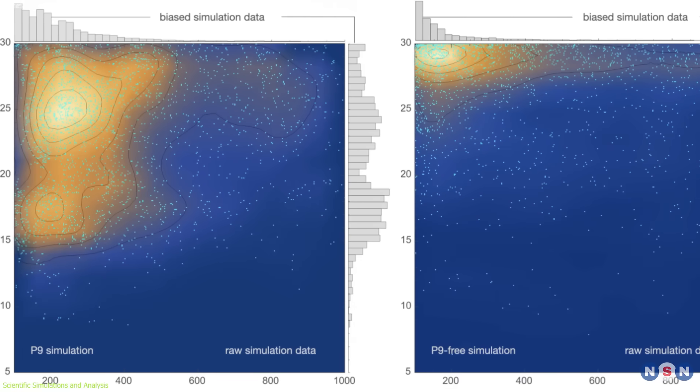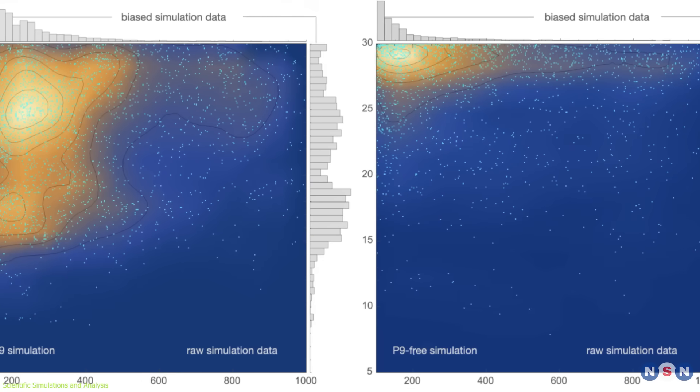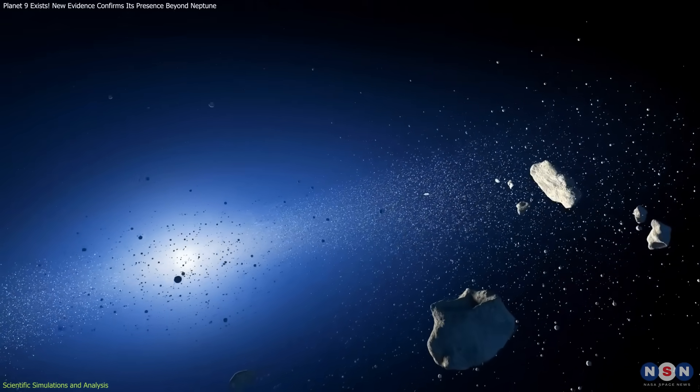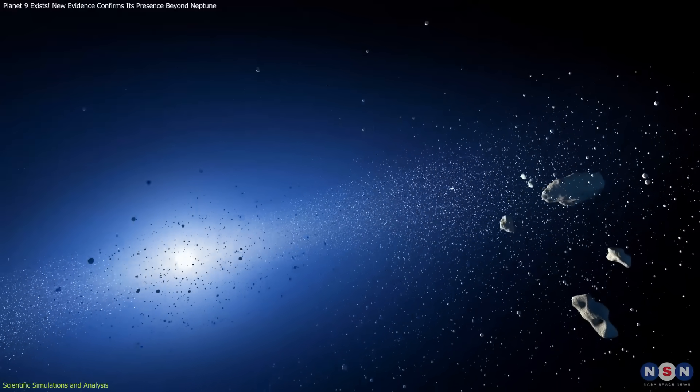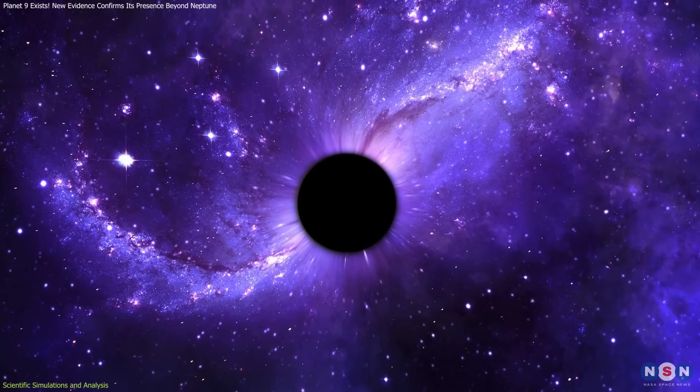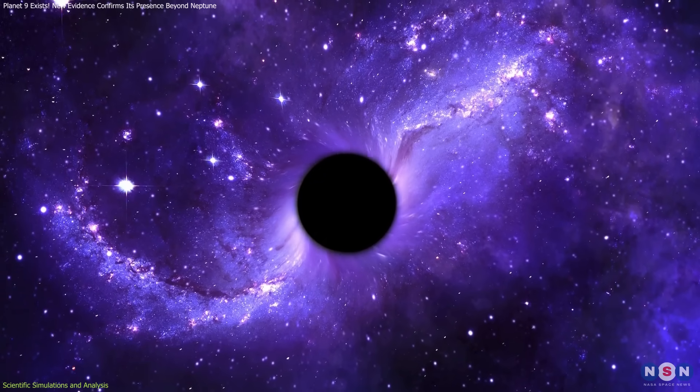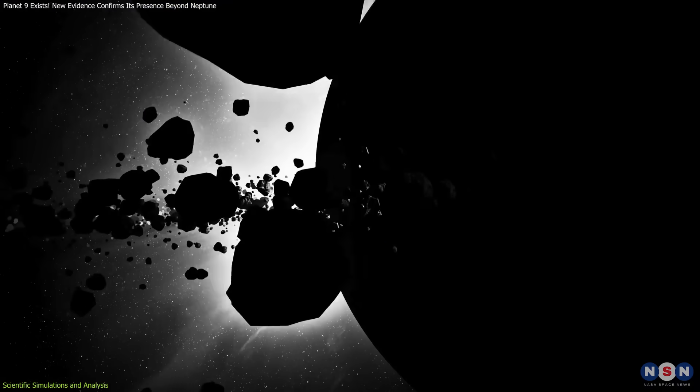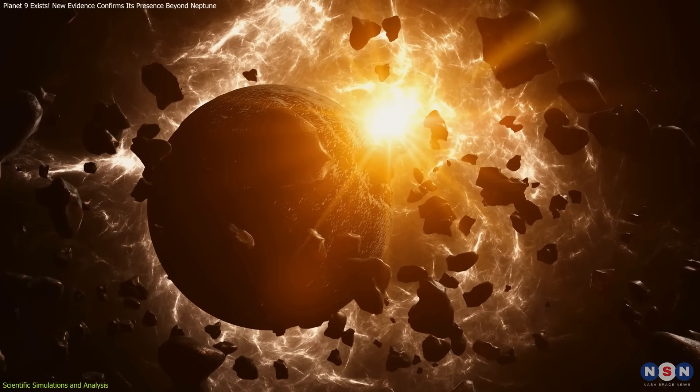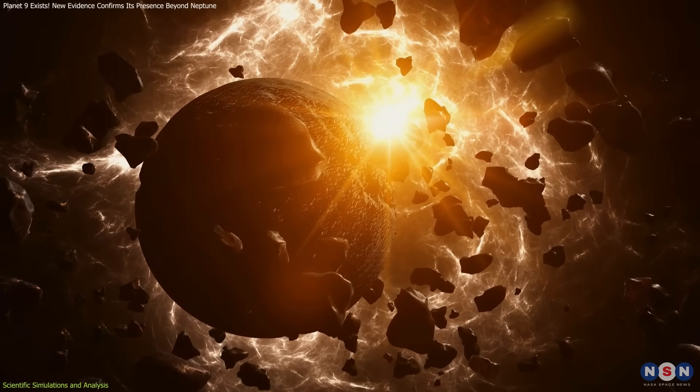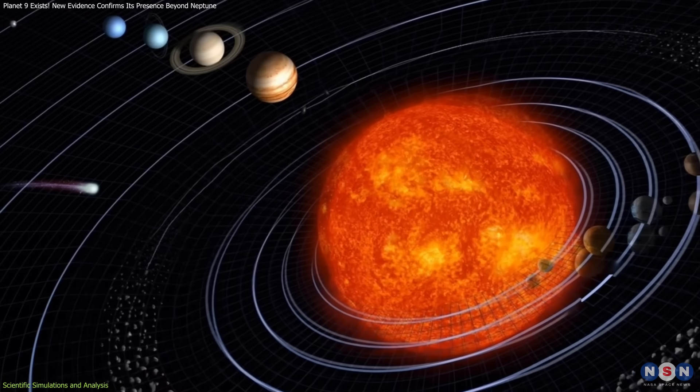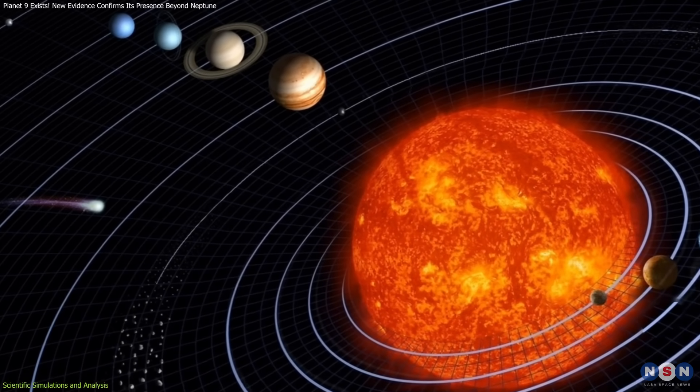What's fascinating is that these simulations also helped rule out alternative explanations. For instance, the idea that these orbits were shaped by a past encounter with another star doesn't hold up under the data. Similarly, the possibility of a small black hole influencing these objects seems less likely, given the strength of the Planet Nine model. By comparing different scenarios, the researchers concluded that Planet Nine is the most reasonable explanation for the strange behavior of the TNOs. This suggests that we still have much to learn about our cosmic neighborhood.